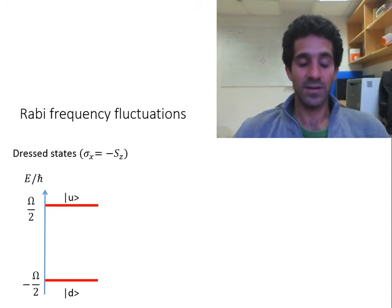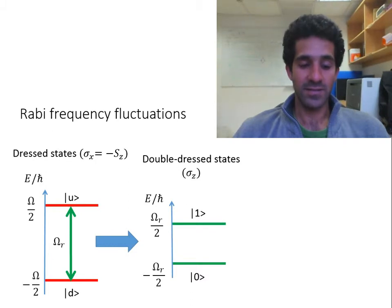To fight this one, we can use the same technique as before. We can apply a second dressing field, which takes us to the double-dressed basis, which is now protected against the Rabi frequency noise of the first dressing field. So we are left with the Rabi frequency noise of the second dressing field, but this one is assumed to be much smaller.